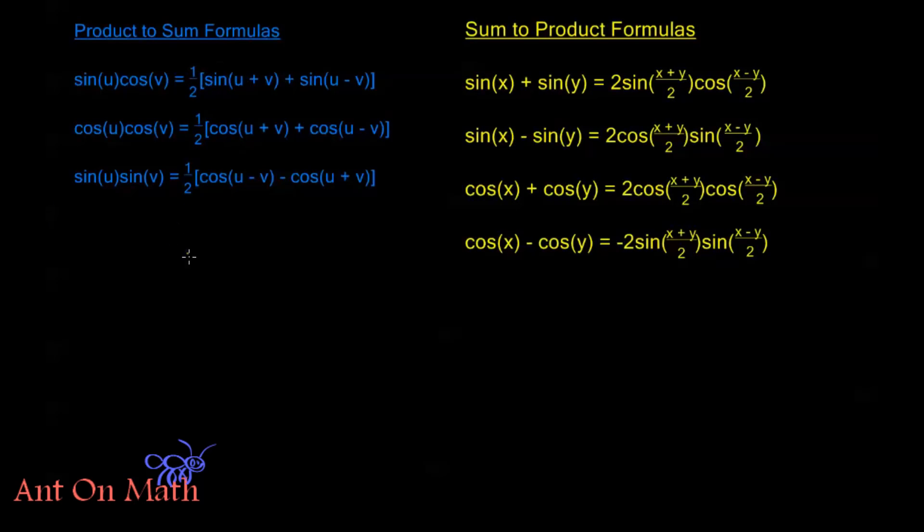Looks like my one-halfs are with my sum-to-products, so we'll go ahead and just look at both of them. The product-to-sum formulas are sine u times cosine v, it's one-half multiplied by an entire quantity, sine of u plus v plus sine of u minus v. The product of cosine of u and cosine of v is one-half of the sum of cosine of u plus v plus cosine of u minus v, and sine of u times sine of v is one-half the product of cosine of u minus v minus cosine of u plus v.